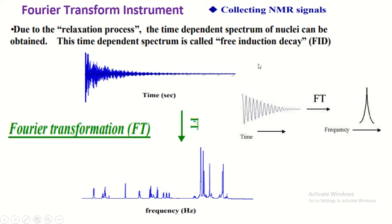And they can easily obtain frequency domain spectra from the time domain spectra. Therefore, very simple. Fourier transform instrument is more useful than the continuous wave instrument.